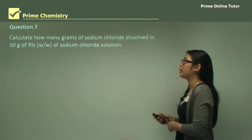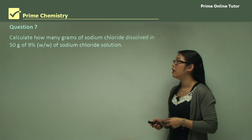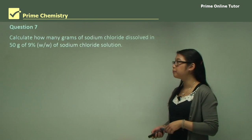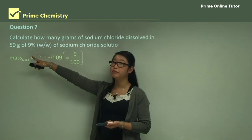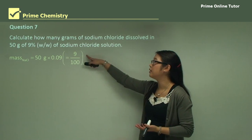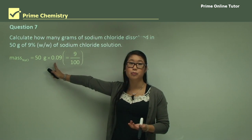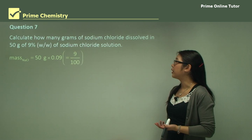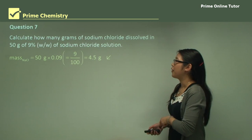Question seven: calculate how many grams of sodium chloride are dissolved in 50 grams of a 9% weight-to-weight solution of sodium chloride. The mass is 50 grams and we have 9%, which is 9 over 100 = 0.09. Multiplying gives us 4.5 grams.